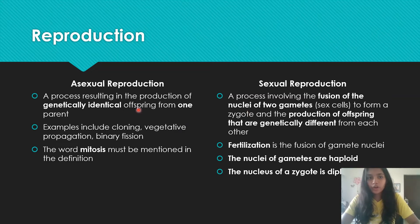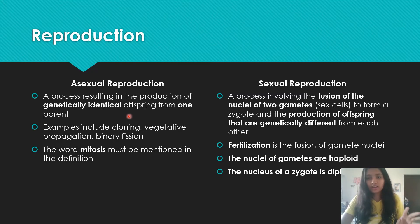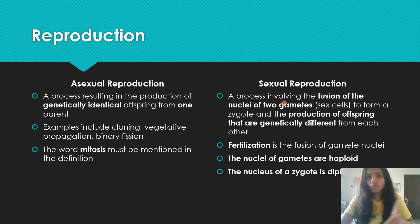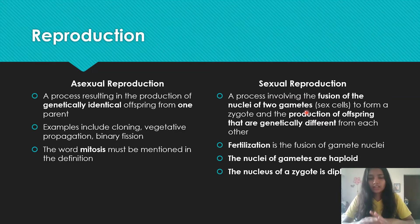So the definition of asexual reproduction has two keywords: genetically identical offspring, and one parent. The third keyword that must be mentioned without fail is mitosis — a process resulting in the production of genetically identical offspring from one parent by mitosis. For sexual reproduction, you need to write the fusion of the nuclei of two gametes, which is basically fertilization, and then the production of offspring that are genetically different from each other. So your definition includes fertilization and its result.